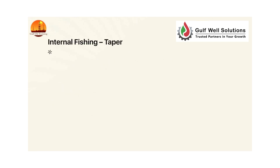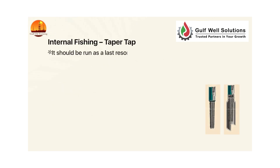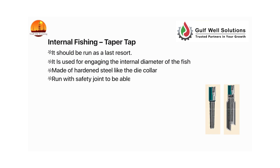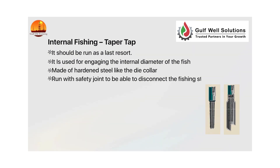Internal fishing — taper tap: should be run as a last resort. It is used for engaging the internal diameter of the fish. Made of hardened steel like the die collar. Run with a safety joint to be able to disconnect the fishing string.